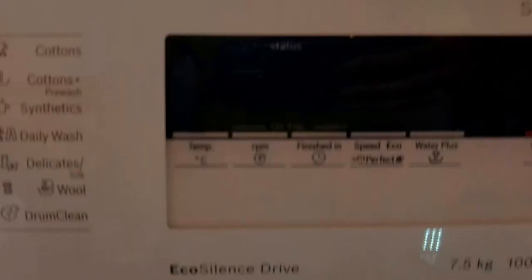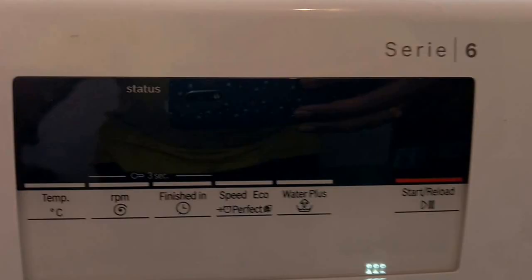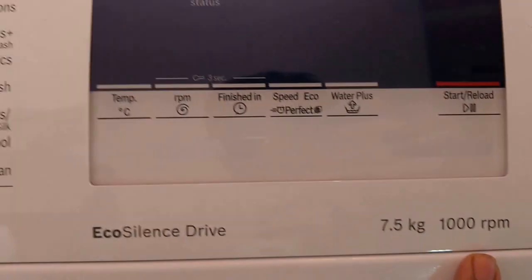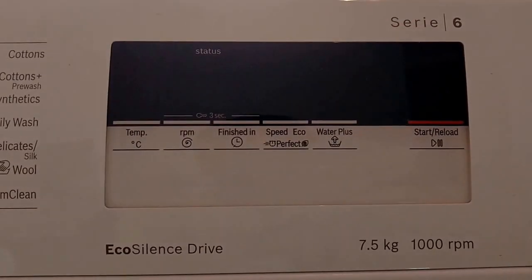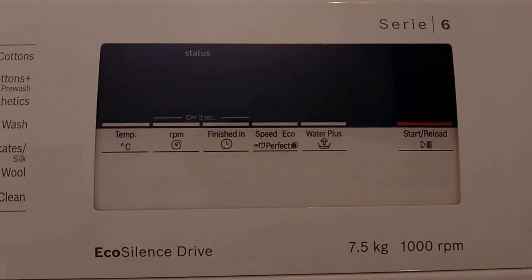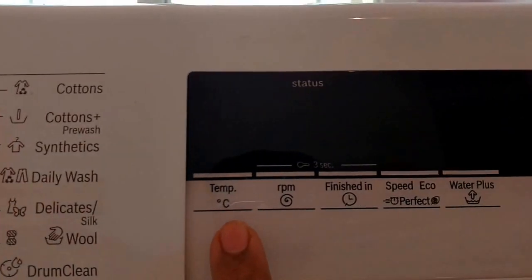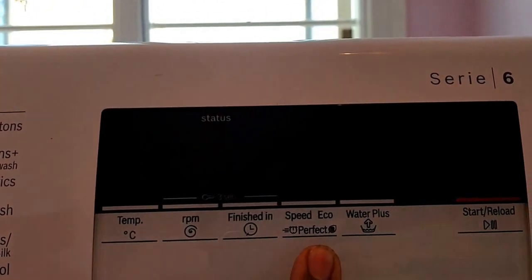And this is where you get the digital display, everything is shown digital. This is the series 6 model which has 7.5 kg capacity with 1000 rpm. The speciality of this model is its eco silent drive and it is super super silent, I can assure that.